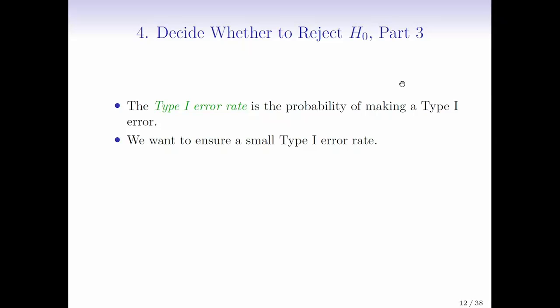So the type 1 error rate is a probability of making a type 1 error. And what we're going to want to do is we're going to want the type 1 error rate to be small. And it turns out that there's a really easy way to do this. If we only ever reject H0 when the p-value is less than alpha, then the type 1 error rate will be at most alpha.